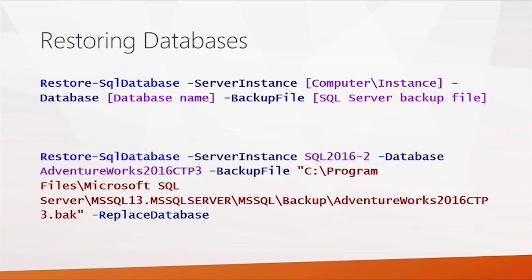Restoring databases is similar. You use the Restore-SqlDatabase cmdlet, again passing in the server instance, the database name, and in this case the backup file location where your SQL Server backup is stored. The example shown passes in server instance SQL 2016-2, restoring the database AdventureWorks 2016 CTP3, with the backup file at the default SQL Server backup location — in the MS SQL backup directory — and we use the replace database parameter to replace the existing database.